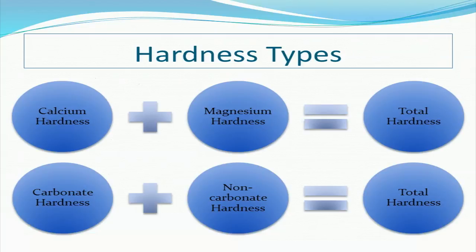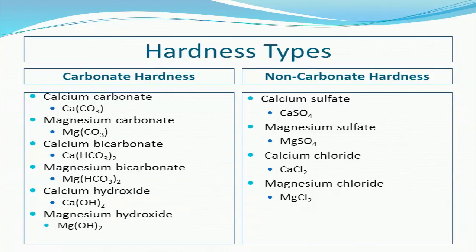It is important for water treatment plant operators to distinguish between different hardness species, as they require different removal methods. There are four basic classifications of water hardness: calcium and magnesium hardness, and carbonate and non-carbonate hardness. Total hardness may be expressed as the sum of calcium and magnesium hardness, or as the sum of carbonate and non-carbonate hardness. Carbonate hardness is any hardness associated with alkalinity anions, which include carbonate (CO3 2-), bicarbonate (HCO3-), and hydroxide products of calcium and magnesium. Non-carbonate hardness is associated with other anions, which typically include sulfate and chloride products of calcium and magnesium.